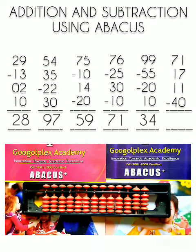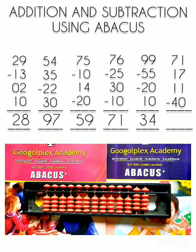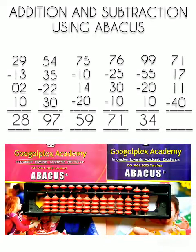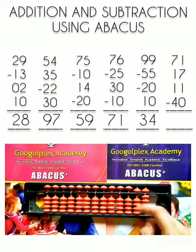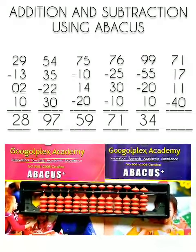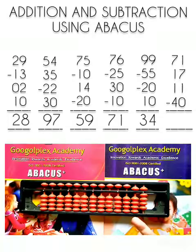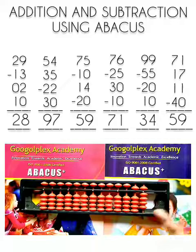Now we have to subtract 40 from this number. For 40 we have to bring 4 beads of the 10's rod down. Minus 10, minus 20, minus 30, minus 40. Now what is our answer? Our answer is 59. 59 is our answer.